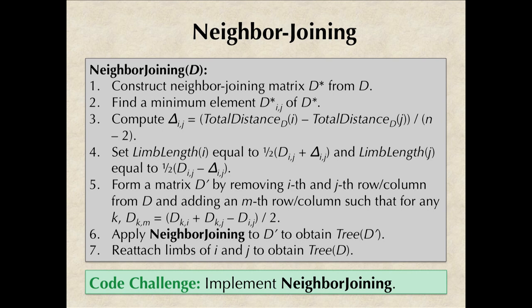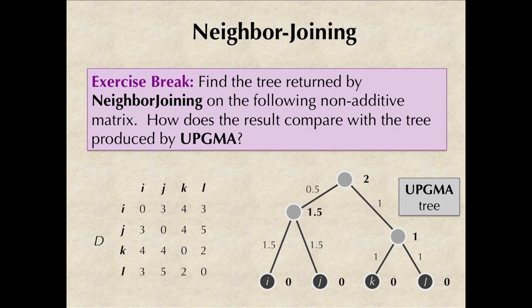In particular, see what happens when the neighbor-joining algorithm is given a non-additive matrix, because we know what's going to happen when it's given an additive matrix. The tree constructed by UPGMA on this same non-additive matrix is shown on the right. How does the tree that you create by running the neighbor-joining algorithm differ from this UPGMA tree?